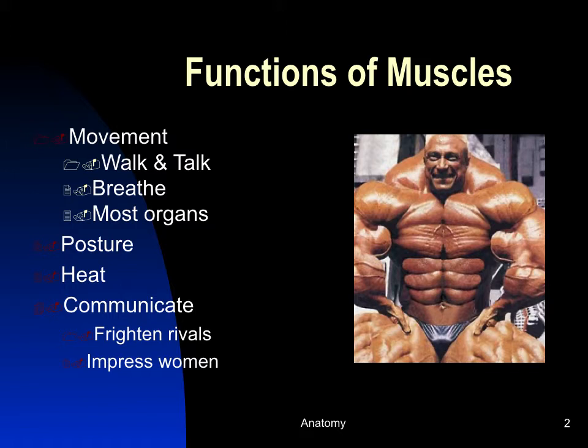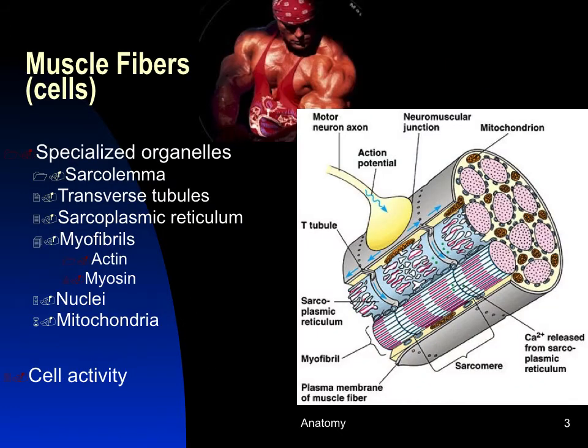As a by-product, muscles produce heat and are important in temperature regulation. They also allow us to communicate. When we talk about this system, skeletal muscles are organs, and the primary tissue in these organs — the tissue structure that contracts — is skeletal muscle tissue.